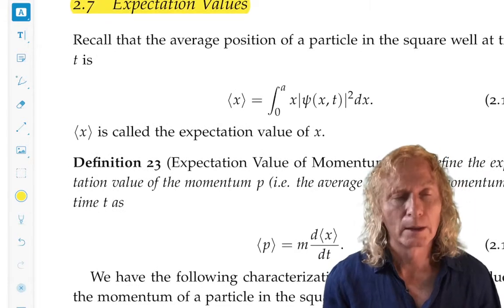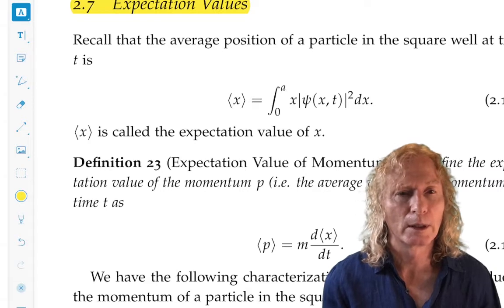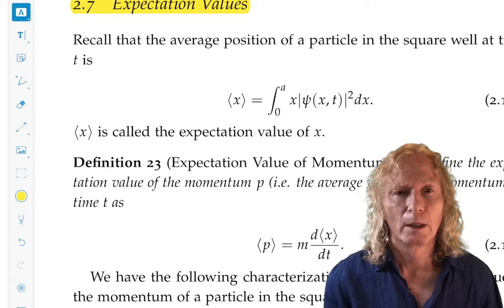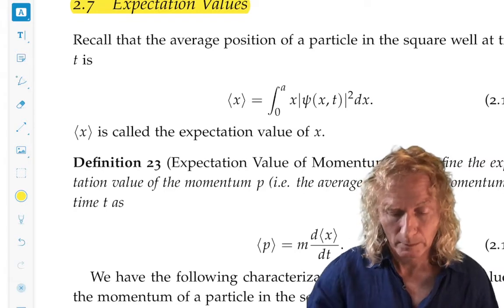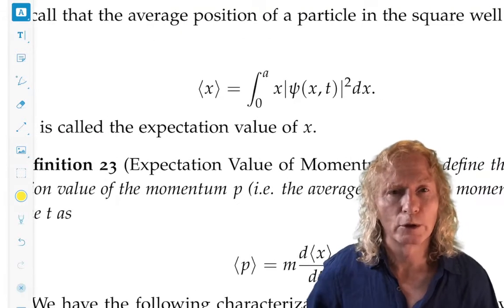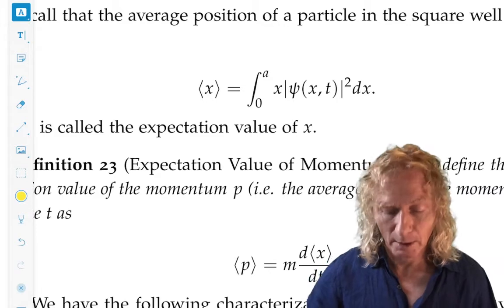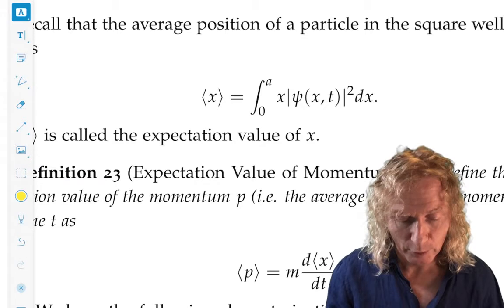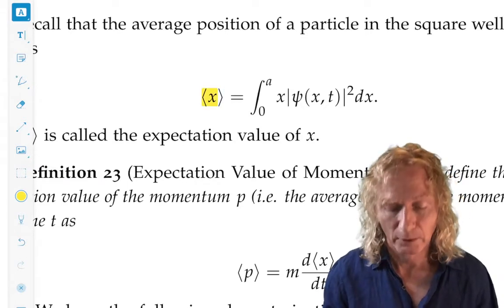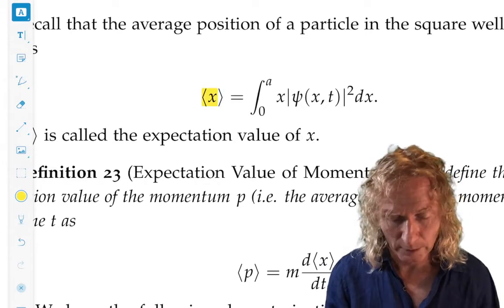Remember that when we were looking at the physical interpretation of the wave function, what it was useful for, and what it meant for a quantum particle to be moving around in the square well, we introduced the idea of the average position. That's a very natural thing to do in this case.